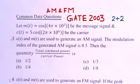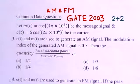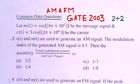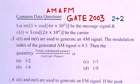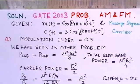To summarize: the first part gives the message signal, carrier, and AM modulation index, and one has to find the ratio of total sideband power to carrier power. The second part uses the same signals to generate an FM wave with a given frequency deviation, and one has to determine the Bessel coefficient. We now proceed to the solution.